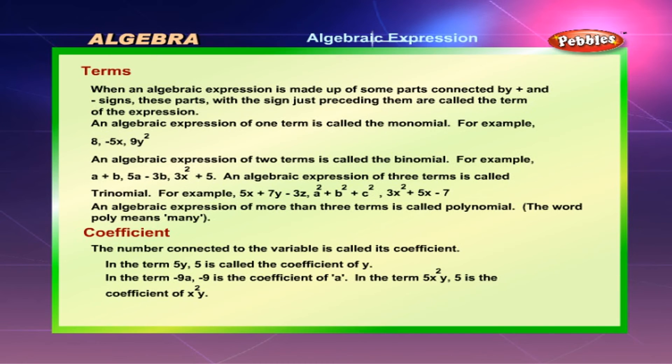The number connected to the variable is called its coefficient. In the term 5y, 5 is called the coefficient of y. In the term -9a, -9 is the coefficient of a. In the term 5x²y, 5 is the coefficient of x²y.